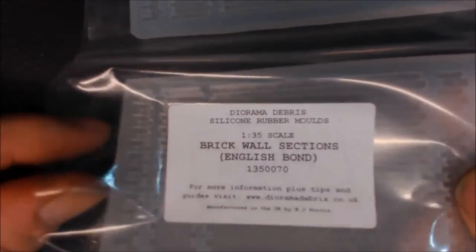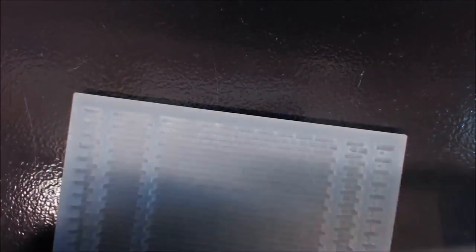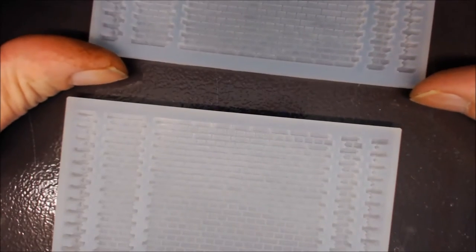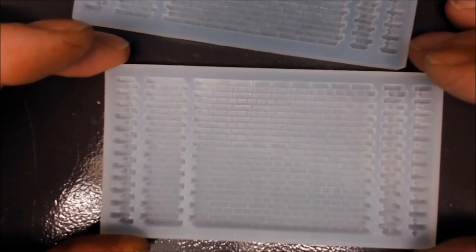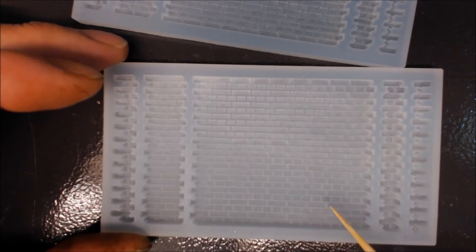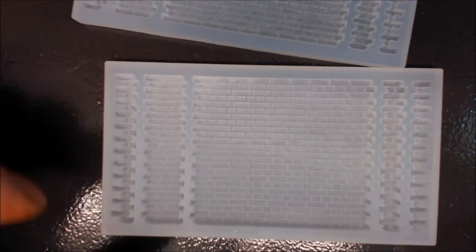Now, this is a double mold - you get two molds - and this is going to be difficult to explain without actually having the parts. Right, this is English Bond, and as you can see, you've got a stretcher course and you've also got a header course.